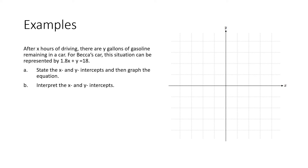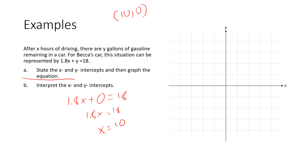One more example: After x hours of driving, there are y gallons of gasoline remaining in a car. For Becca's car, the situation can be represented by 1.8x plus y equals 18. The first part asks us to state the x and y intercepts and then graph the equation. Let's find the x-intercept: 1.8x plus 0 equals 18. Remember, when we do the x-intercept, y is always 0. So 1.8x equals 18, and dividing gives us x equals 10. So our ordered pair is (10, 0).